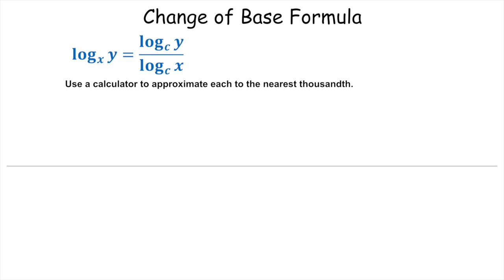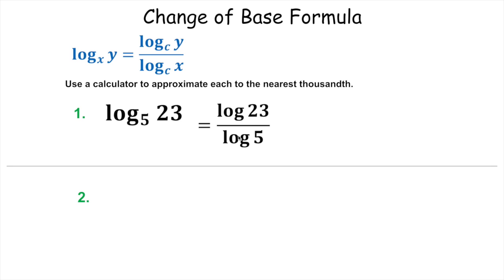Now, the change of base formula — this is going to be the easiest one, especially if you have the TI-Inspire. For the TI-84 first: whatever this larger number is — the argument — goes on top, and whatever the base is goes on the bottom. So log base five of twenty-three is the same thing as log twenty-three divided by log five. On your TI-84, type log twenty-three, close parenthesis, divided by, open parenthesis, log five, close parenthesis — that will give you your answer. Round to the nearest thousandth — three decimal places.